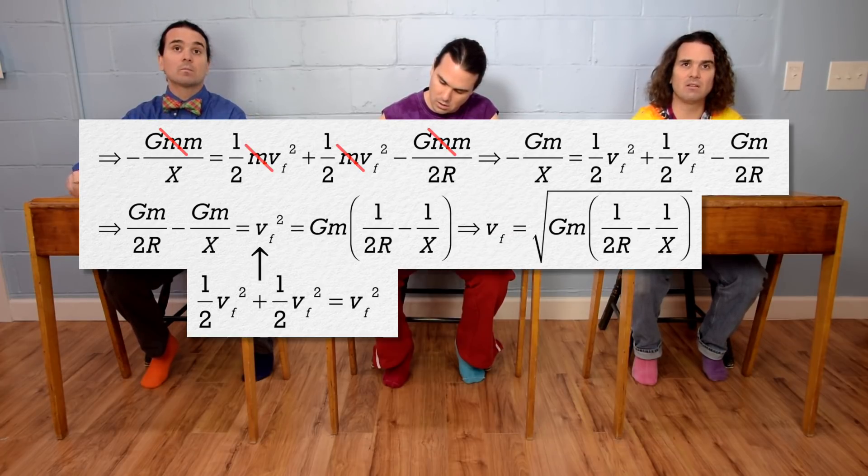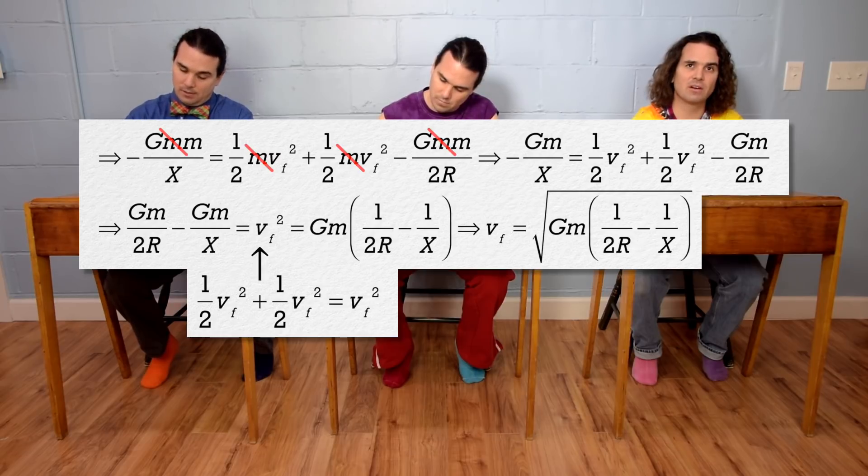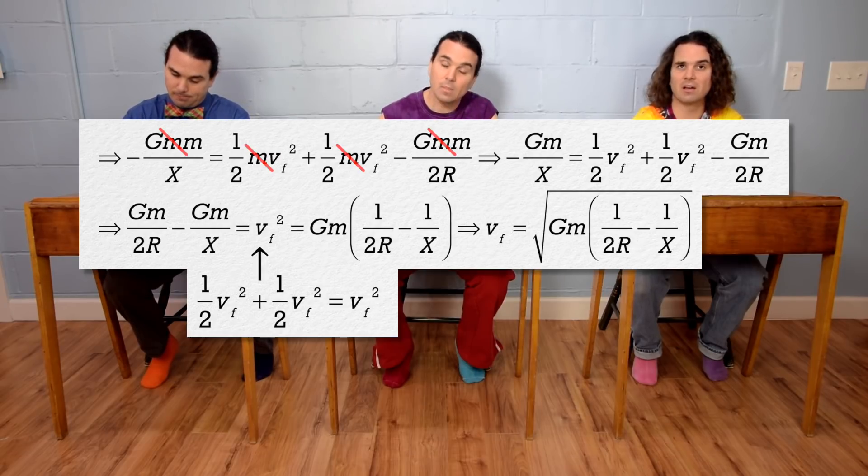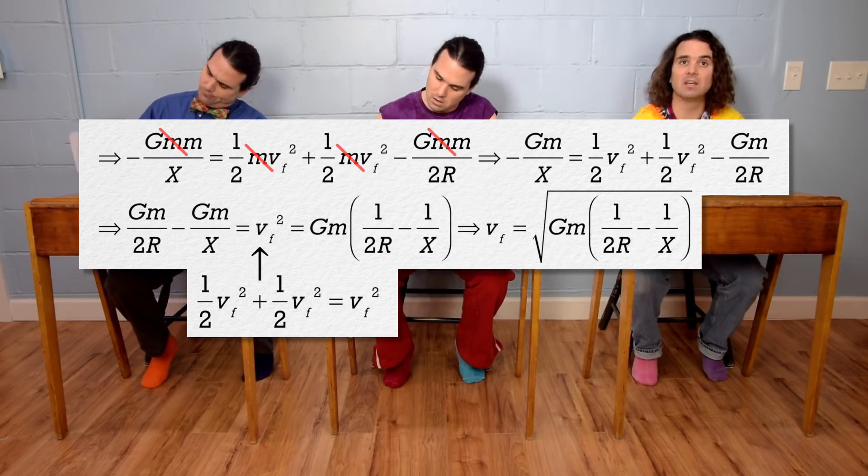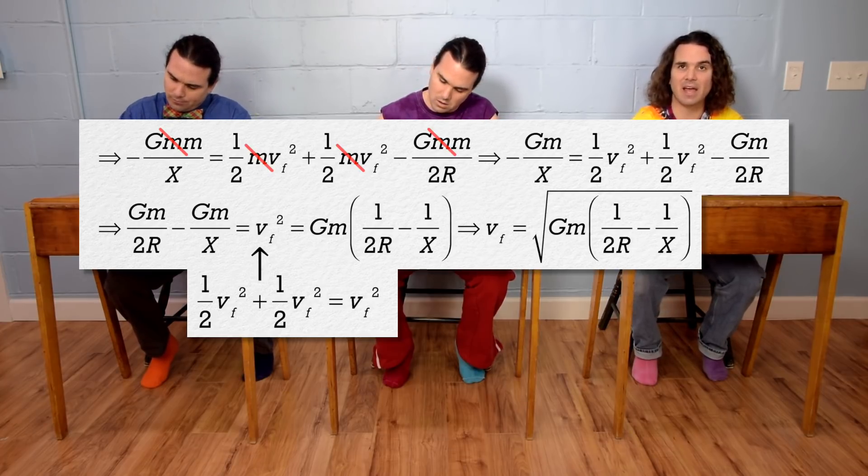We can take the square root to solve for the final velocity of each sphere, which equals the square root of big G times mass times the quantity, the inverse of 2R minus the inverse of X.